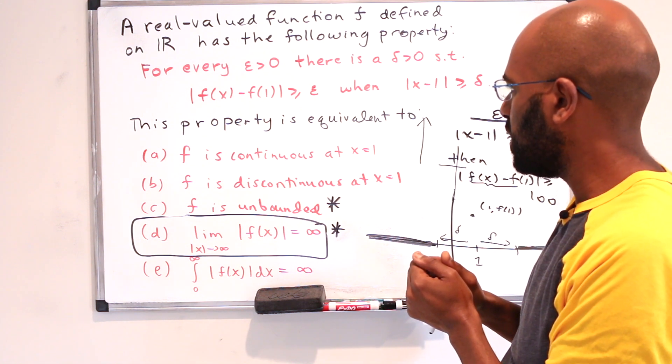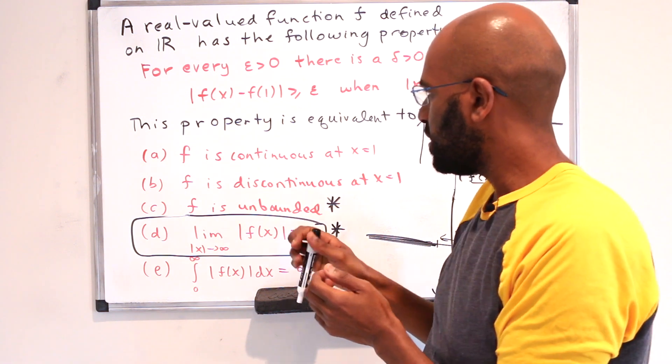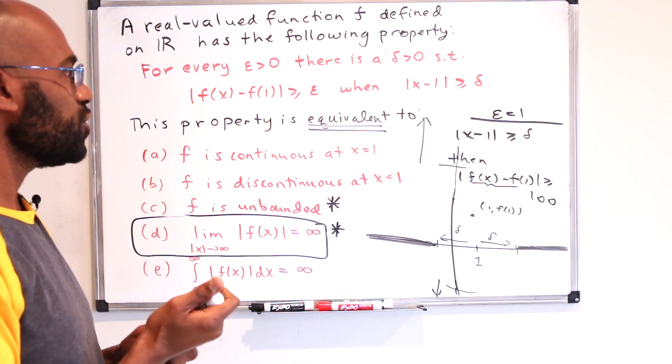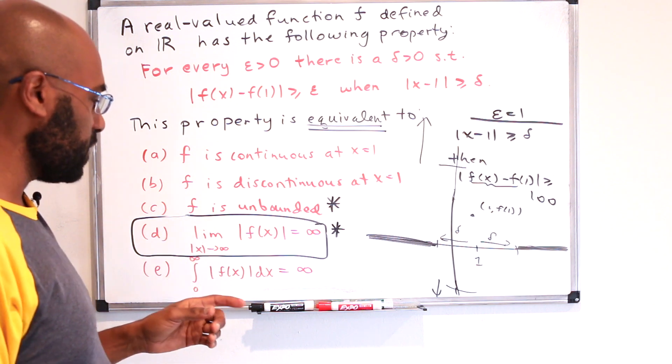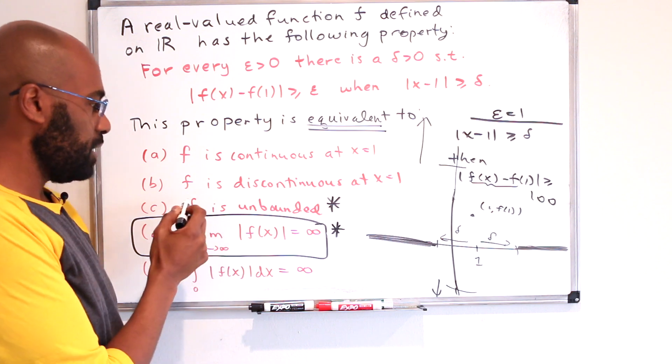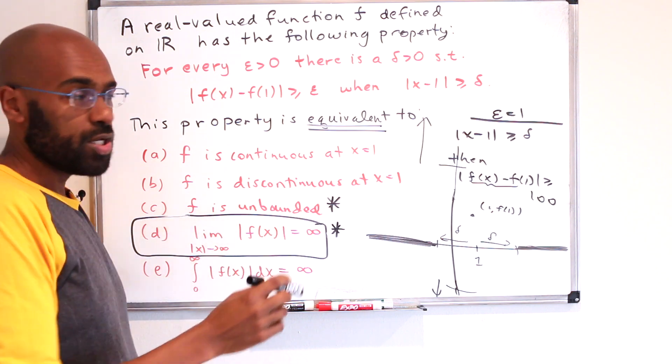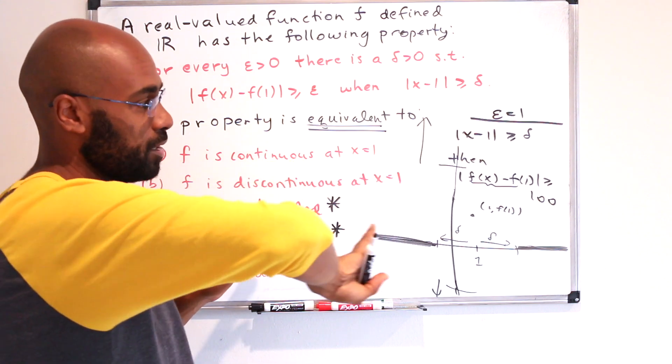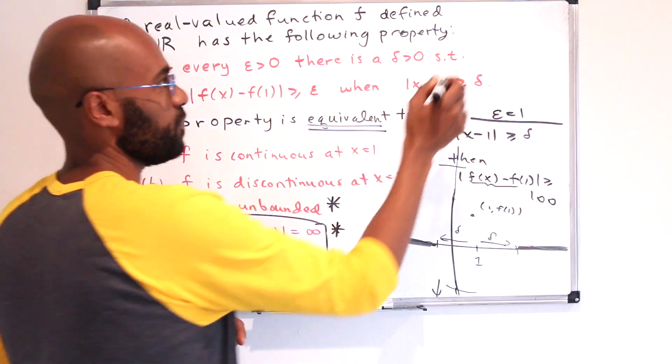Okay, so the key here, which is tricky, is if you look at choice C, it says f is unbounded. But the question here is what's actually equivalent to this statement? And if you think about unboundedness, you could be unbounded by being unbounded in one direction and not the other.